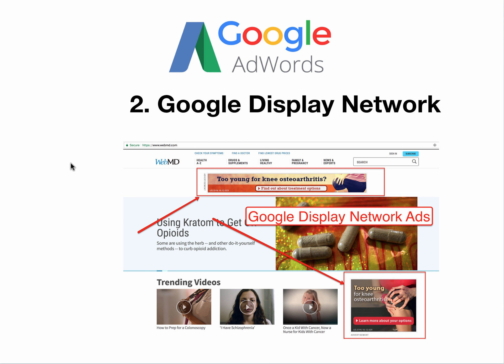Next, we have the Google display network. This is the ads that you see on blogs and websites all over the internet. You can see some examples here. These ads are shown by Google and they will be distributed all over different blogs and websites that you're looking at. The cool thing is Google display network gives you access — you can create an image ad and it will instantly be shown on maybe millions of websites. Google is the most popular advertising network that helps websites monetize, so they have access to millions of websites all over the world that you can show your ads on, and if those websites are a good match for your potential customers, you can put your ads directly on there. Google display network is very, very powerful.